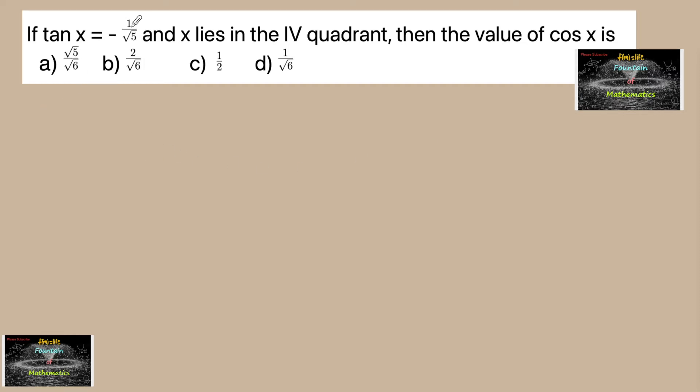If tan x is equal to minus 1 upon root 5, and x lies in the fourth quadrant, then the value of cos x is